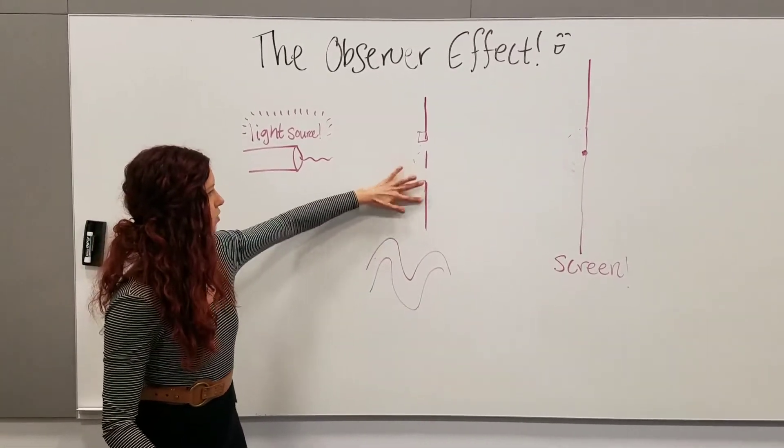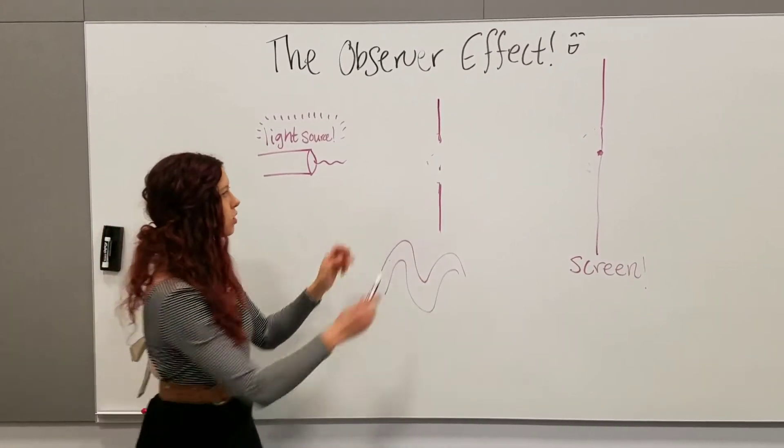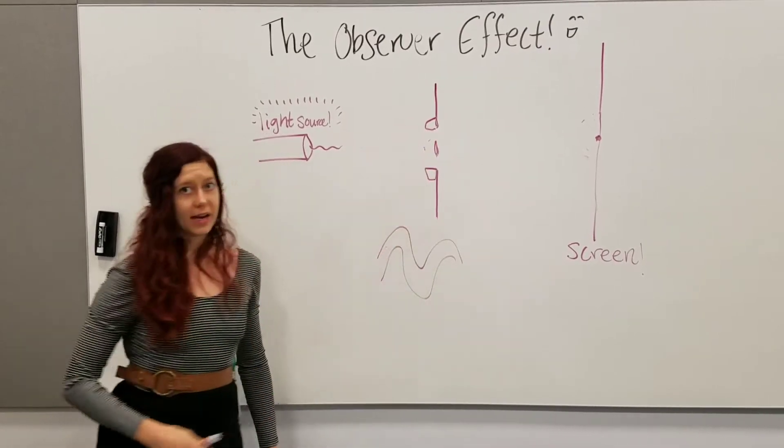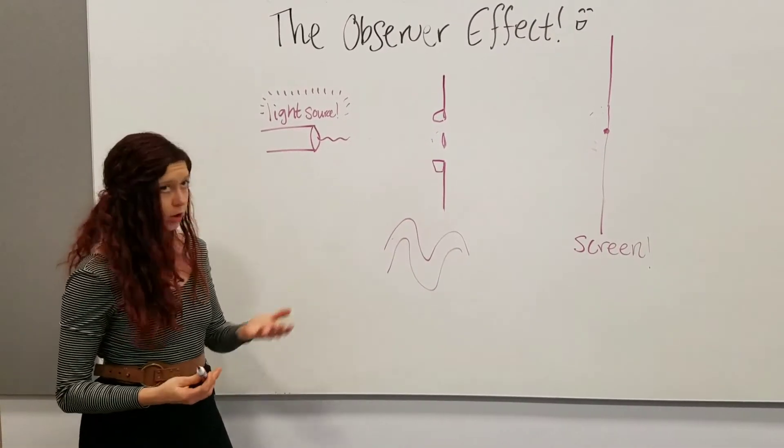If you remove the detectors, you get the interference pattern again. But as soon as you add the detectors back, the light is no longer acting like a wave, it's acting like a particle, basically.